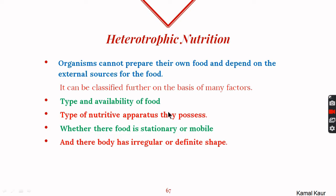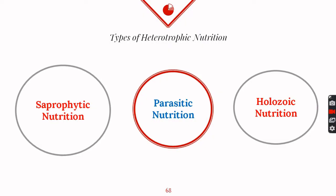These factors are the type and availability of food, the type of nutritive apparatus they possess, whether their food is stationary or mobile, or whether the organism's body is irregular or has some definite shape. We divide heterotrophic nutrition into many categories; a few of them are saprophytic nutrition, parasitic nutrition, and holozoic mode of nutrition.